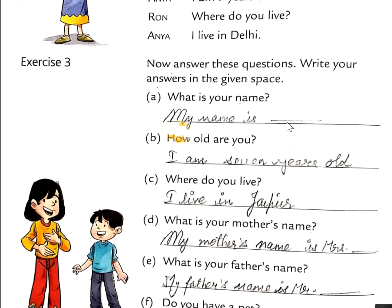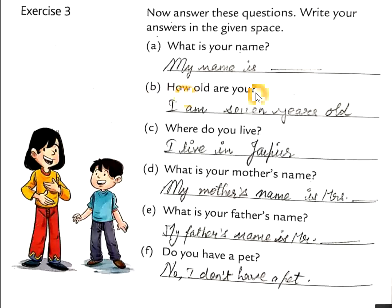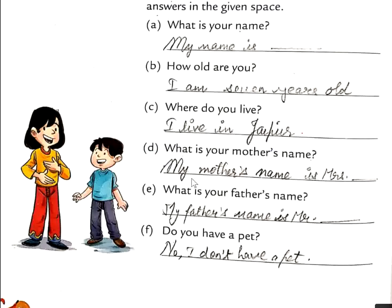A: What is your name? My name is — jo bhi aapka naam ho, aap mention karo. B: How old are you? I am 7 years old / I am 8 years old — jo bhi aapki age hai, woh likhna hai. C: Where do you live? I live in Jaipur. Full stop. D: What is your mother's name? My mother's name is Mrs. — jo bhi aapki mamma ka naam hai. E: What is your father's name? My father's name is Mr. — jo bhi aapke father ka naam hai. F: Do you have a pet? Agar aapke paas pet hai: Yes, I have a pet. Agar nahi hai: No, I don't have a pet.